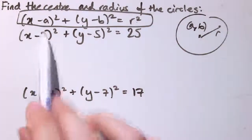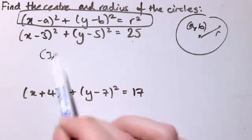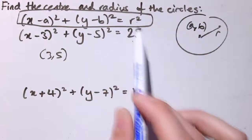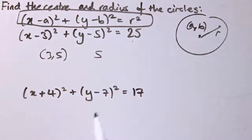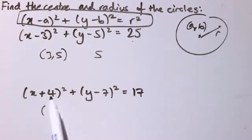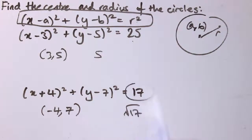So here a is 3, b is 5, r is 5, so this is a circle that has centre (3, 5) and radius square root of 25, which is 5. Remember to be careful with negative numbers — so this one would be x minus minus 4, so that's got centre (minus 4, 7) and the radius would be the square root of 17. And of course if this number was negative or zero, it's not a circle.